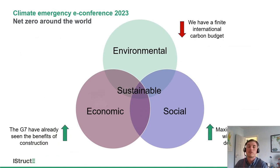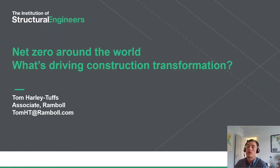To finish then: we have a finite carbon budget and we need to work out the best way of spending it. There are economic benefits of construction, but arguably the G7 and developed nations which are setting these carbon targets have already seen a lot of those benefits, and if we want to maximize the social benefit then a lot of new construction would need to happen in the developing world. That was a quick run through covering quite a few policy topics, giving you a picture of where net zero sits in the broader sustainability perspective, what's driving it on our projects, and our role as designers and stewards of good sustainable practice in policy making. Thank you very much.